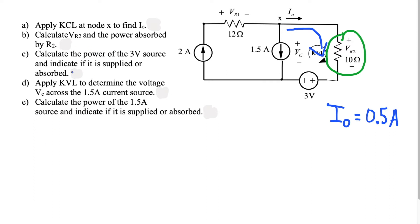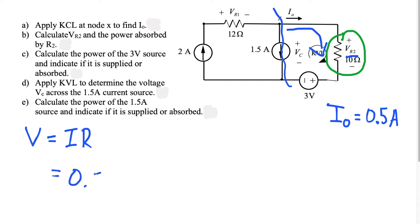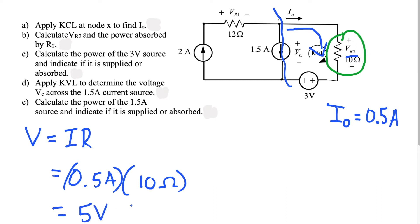To find the voltage, we use V equals IR. In this loop, i_naught is 0.5 amps and the resistor is 10 ohms. So VR2 equals 0.5 amps times 10 ohms, which gives us 5 volts. Therefore VR2 is equal to 5 volts.